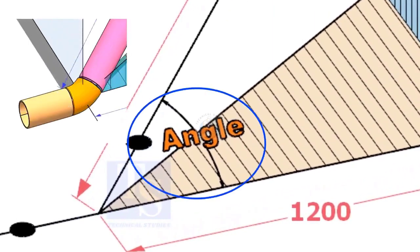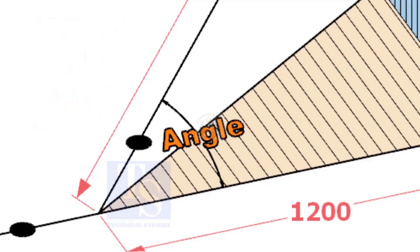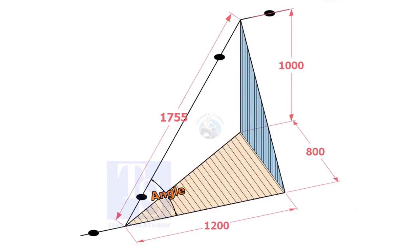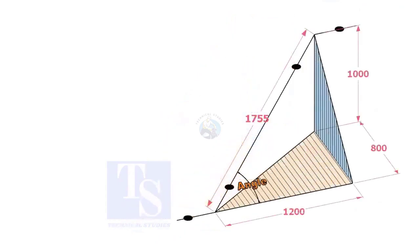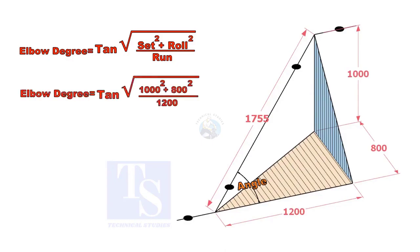Let us calculate the degree of the elbow or the including angle. The formula is the root of the set and the roll is divided by run into tan.